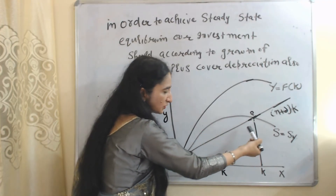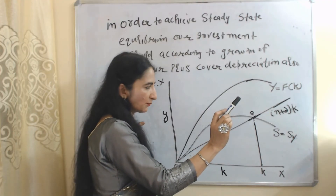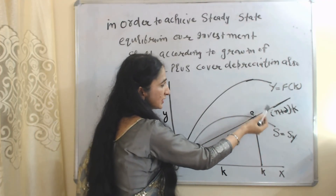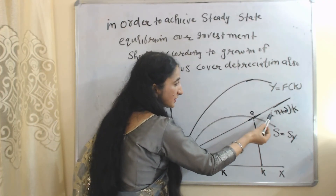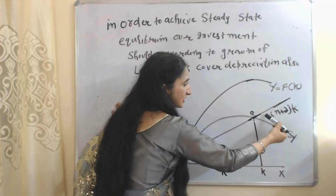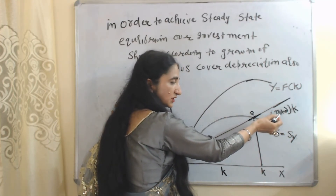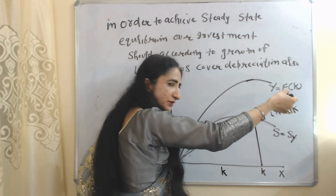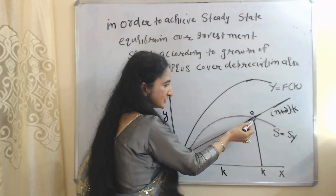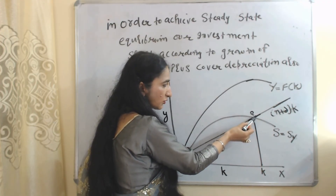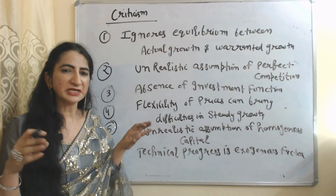Before point E, our population growth is high but investment is low, so we need to increase investment to achieve the steady state. After point E, output per worker starts reducing and investment also reduces, but population and depreciation are still increasing, causing divergence from the steady state. Only point E is the steady state equilibrium, where investment equals population growth plus depreciation.